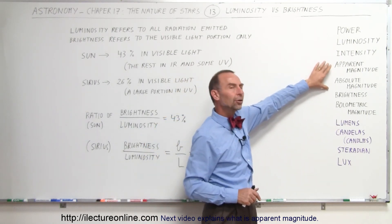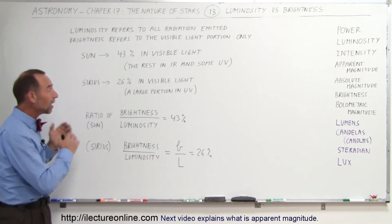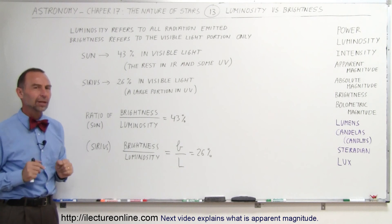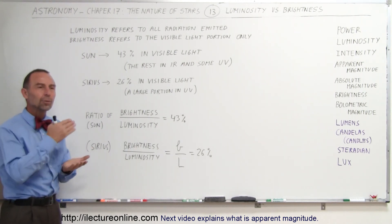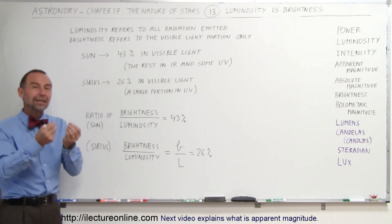Well, the terminology apparent magnitude and absolute magnitude actually refers not to the total luminosity of the object, but to the brightness of the object—the portion in visible light only. And that's why there's some discrepancy when we start calculating luminosity and brightness of objects relative to how bright they appear to us here on the Earth.